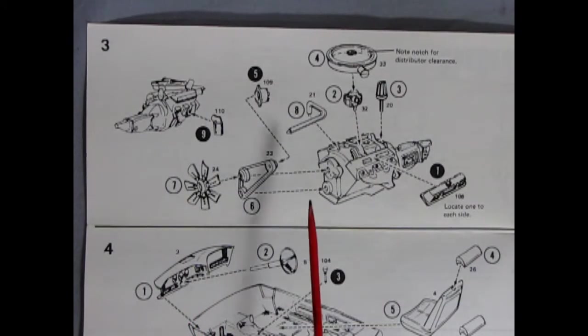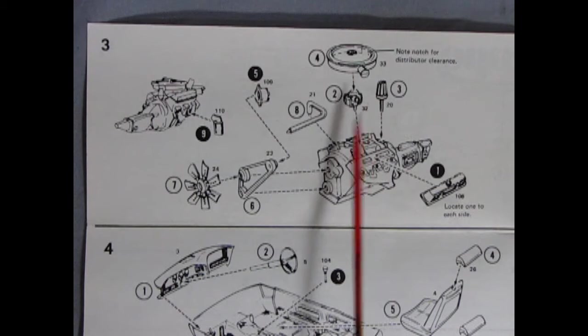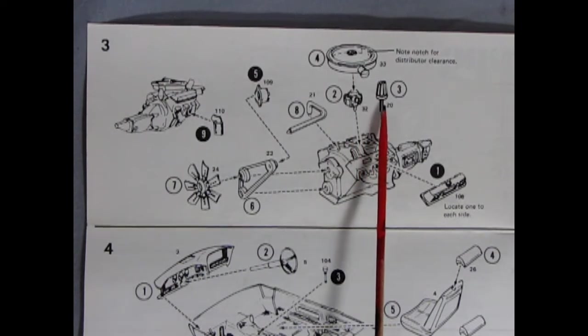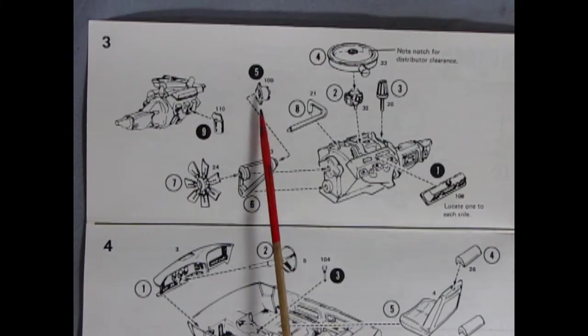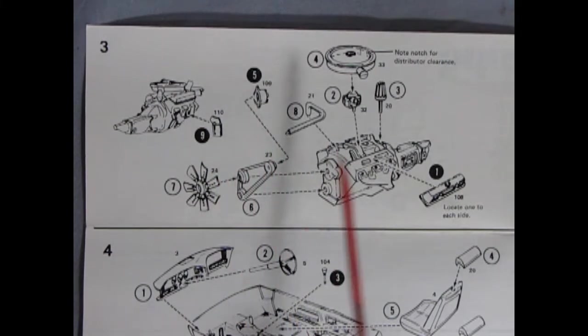Panel 3 shows the completion of our engine with the air cleaner, the carburetor, the distributor, upper radiator hose, valve covers, alternator, oil filter, pulleys, and our fan.